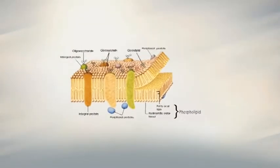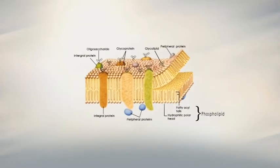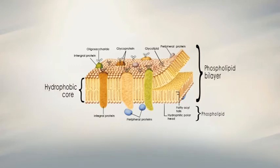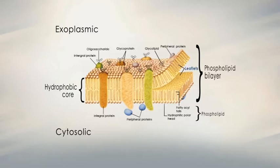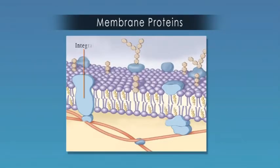The lipid bilayer provides a distinctive two-dimensional hydrophobic environment for membrane proteins. These proteins interact with membranes in three different ways. Some are embedded within the hydrophobic core of the phospholipid bilayer. Other proteins are associated with the cytosolic or the exoplasmic leaflets of the bilayer. On the basis of their position with respect to the membrane, they can be classified into three categories: integral, lipid-anchored, and peripheral.